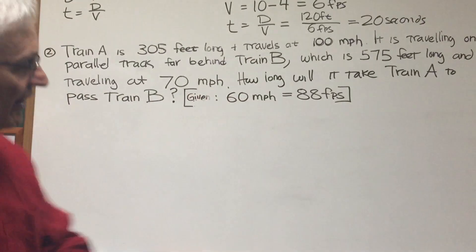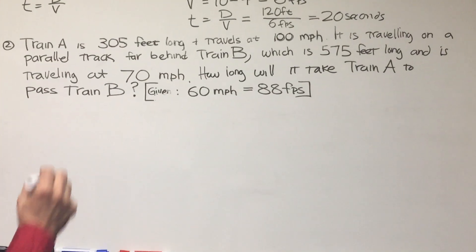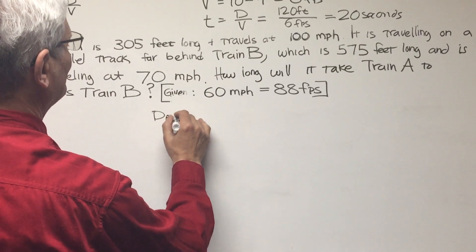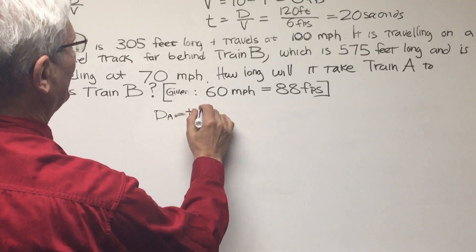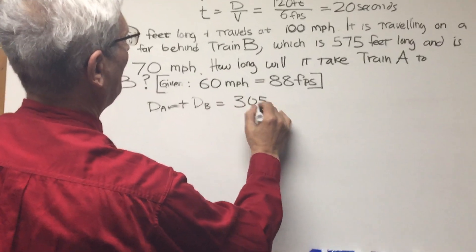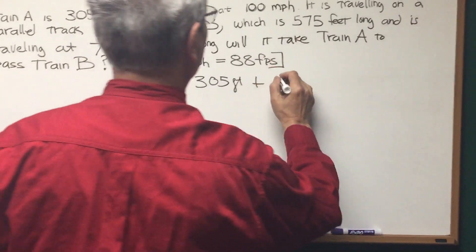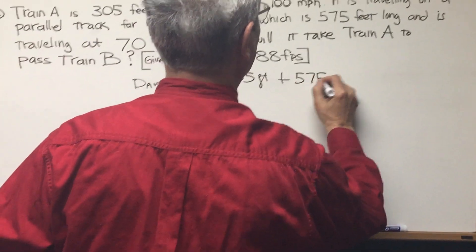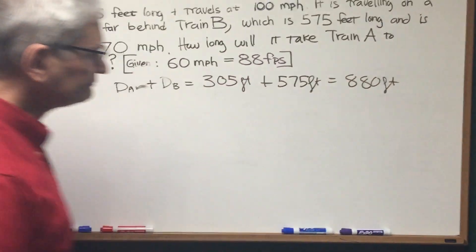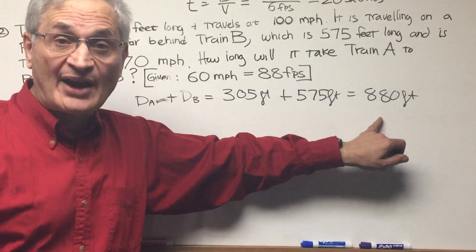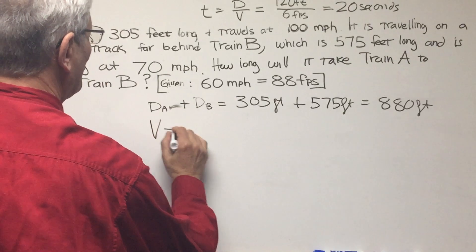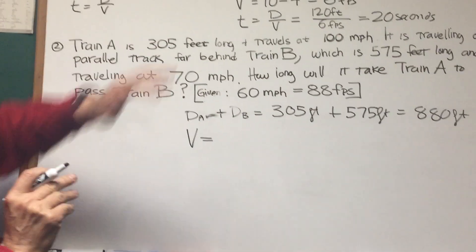Now let's proceed with this problem. The distance train A plus train B equals 305 feet plus 575 feet, which equals 880 feet. That's how far train A has to travel in order to completely pass train B.